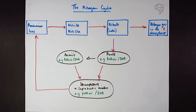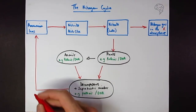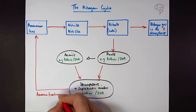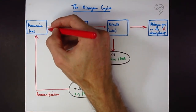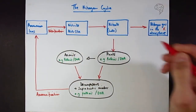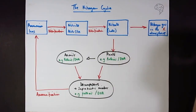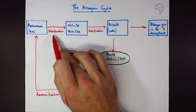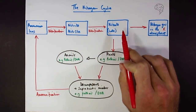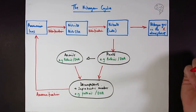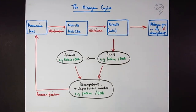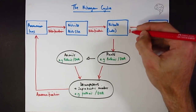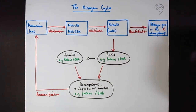Now for the names of the stages. The process of making ammonia is called ammonification — the suffix '-fication' means making something. The next two steps — converting ammonium to nitrite and then nitrite to nitrate — both share the name nitrification, because it's the process of making useful, soluble nitrogen that plants can absorb and use to make proteins.